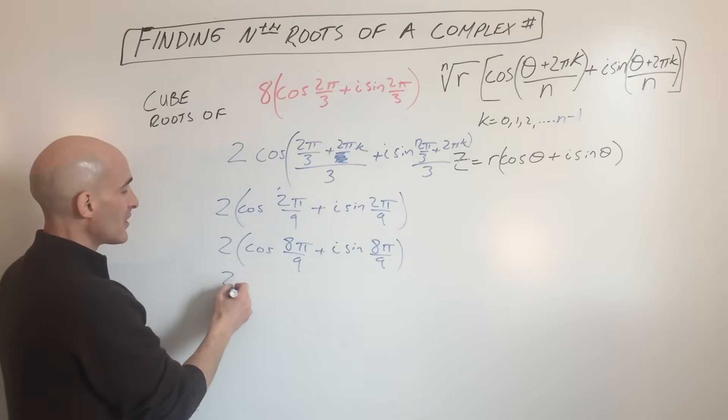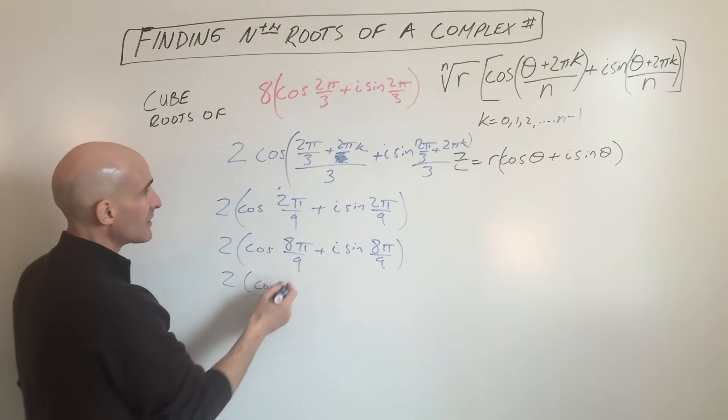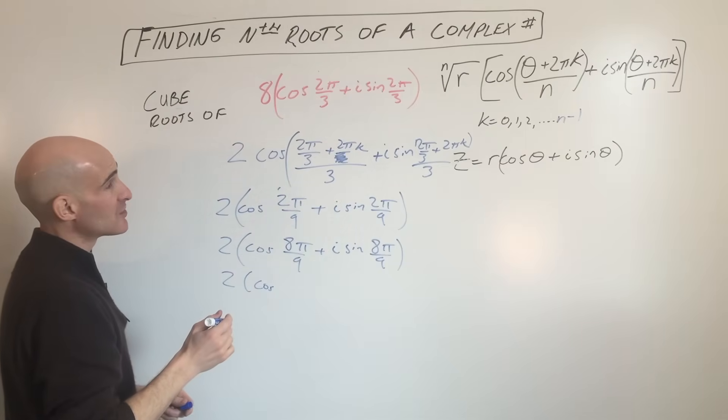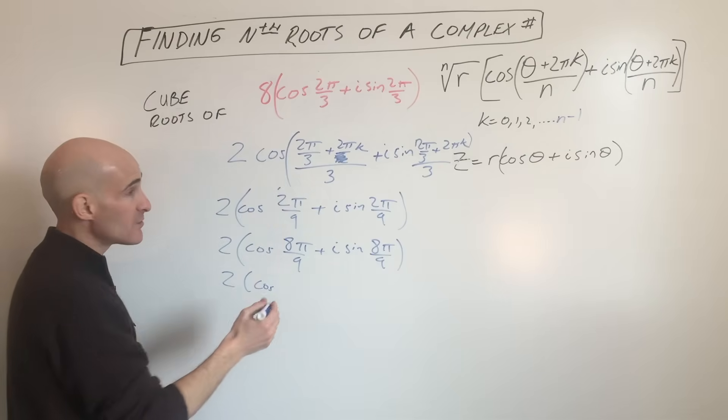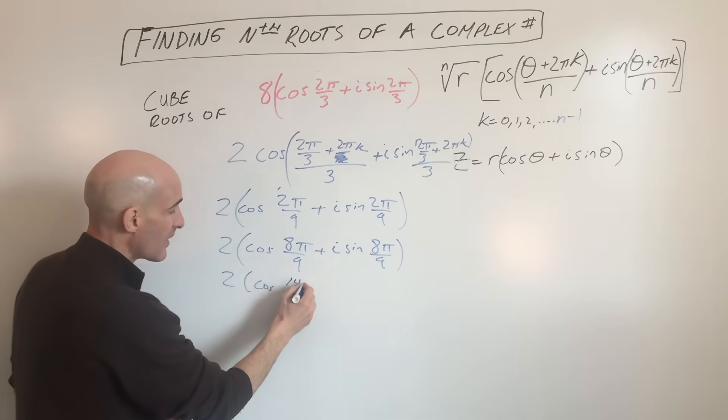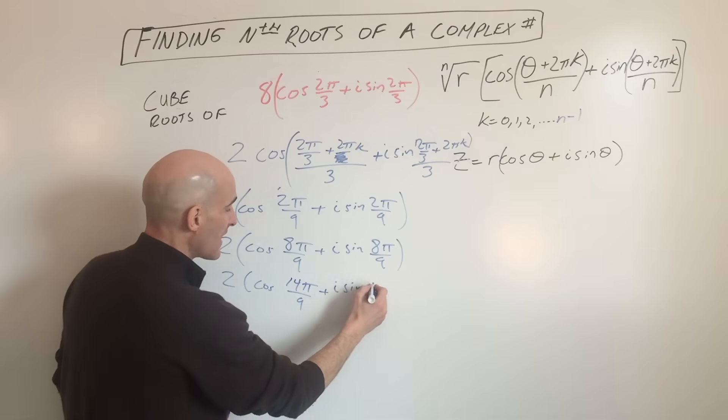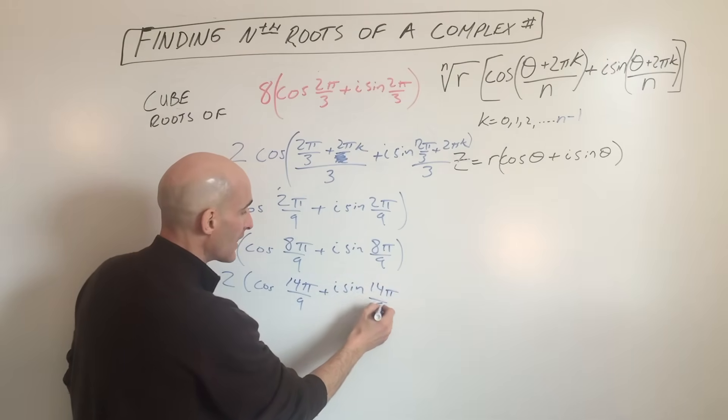And then the third one is going to be 2 cosine. k is 2 now, so that's 4π, which is 12π/3, plus 2π/3 is 14π/3, divided by 3 is 14π/9, plus i sine 14π/9.